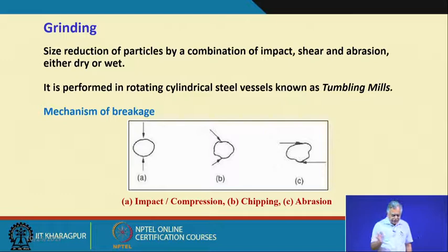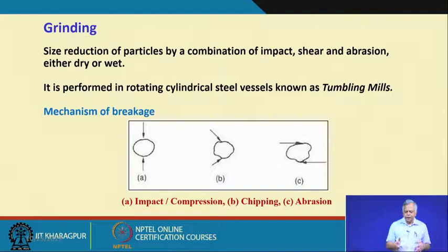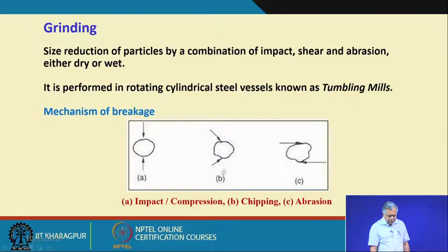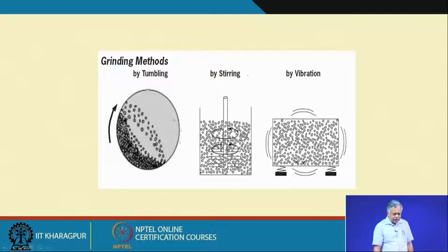How do we impart impact, shear, and abrasion all three in one go? It is generally performed in rotating cylindrical steel vessels. In general terminology we call them tumbling mills — we rotate the particles inside tumbling mills. The mechanism of breakage is by impact, chipping or shear forces, and abrasion. In mineral processing plants, grinding is conventionally done through tumbling mills.